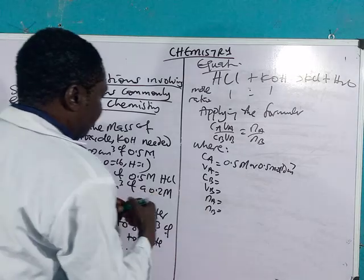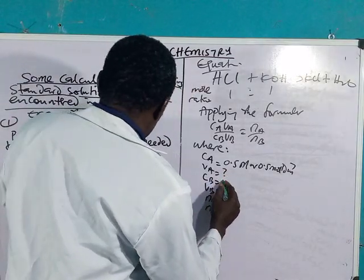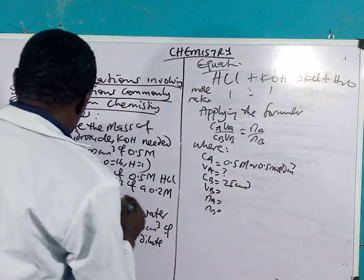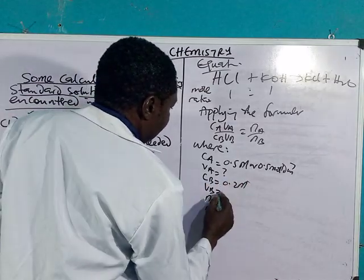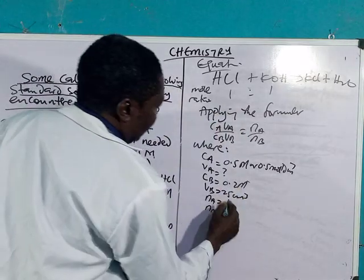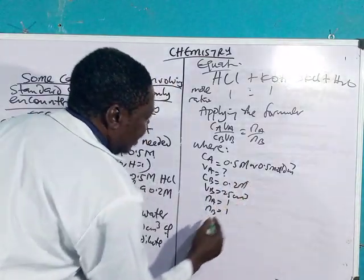C_A is already given in the question: 0.5 molar. V_A, you don't know—that's what you are looking for. C_B is 0.2 molar, while V_B is 25 cm³. Mole ratio is one to one. Next is to substitute.